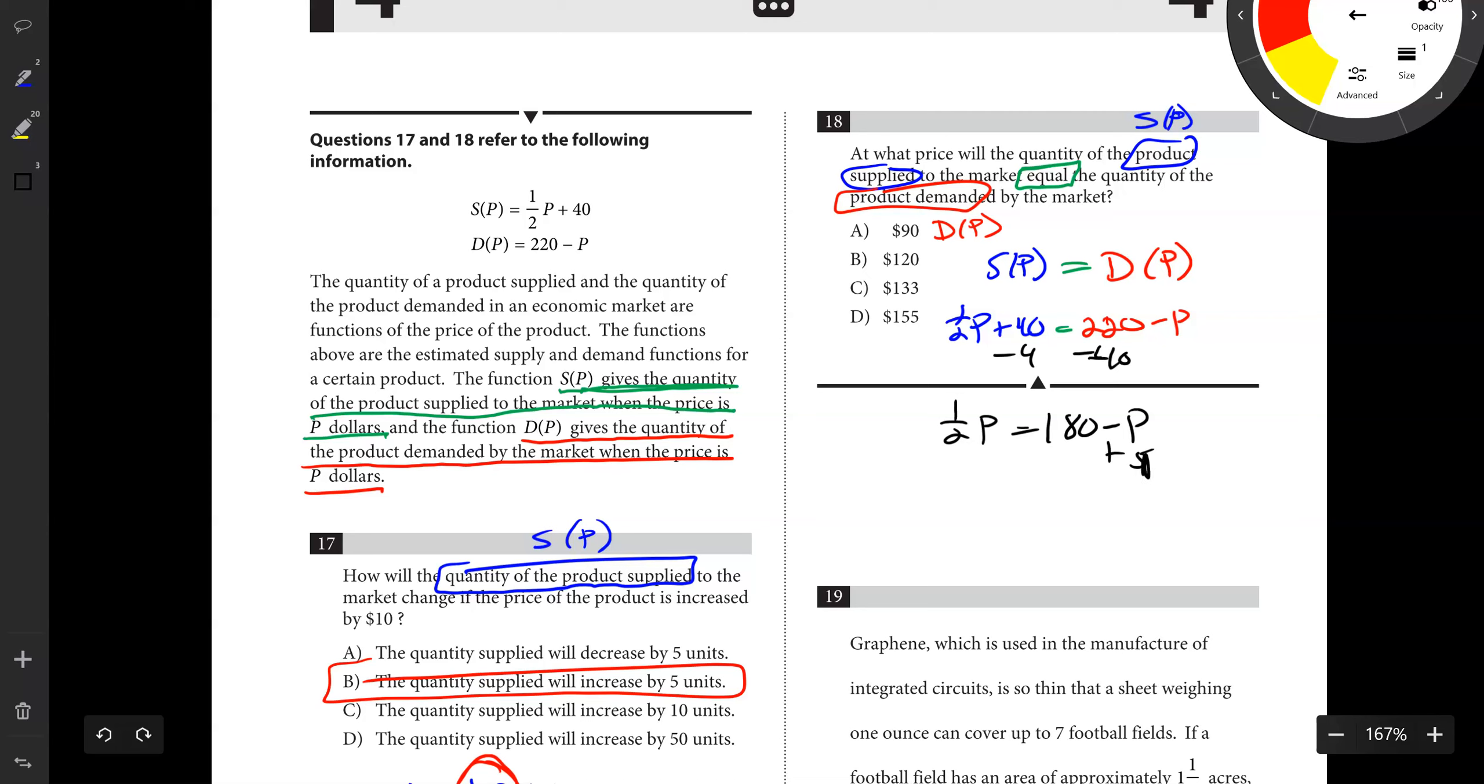One half P equals 180 minus P. I subtracted the 40 over. If I add P over, I get three halves P equals 180. So P equals 180 times two thirds, which is going to be 120. So the price would be 120.